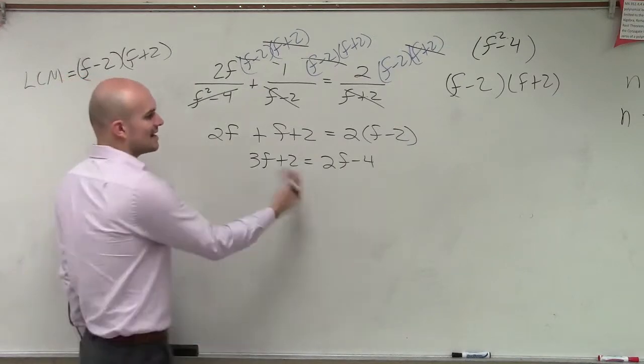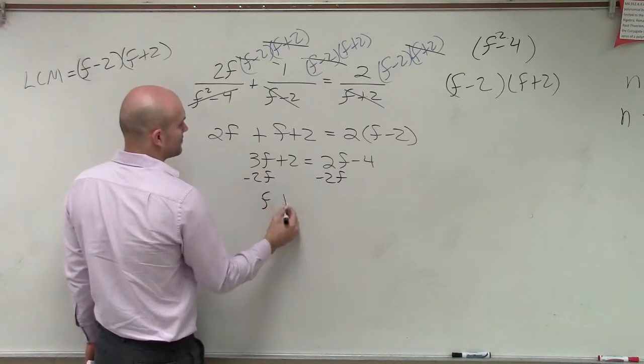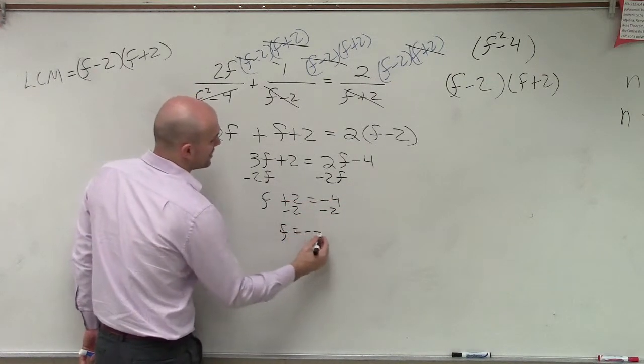Now, let's get the variables to the same side. So I'll subtract 2f. So I get f plus 2 equals negative 4. Subtract 2. And I get f equals negative 6.